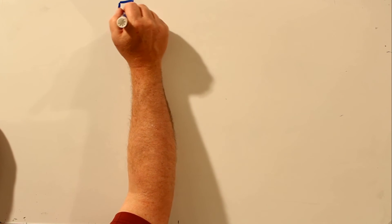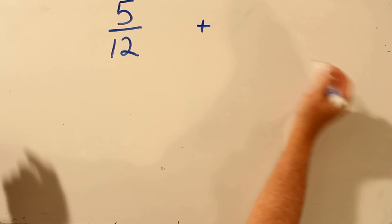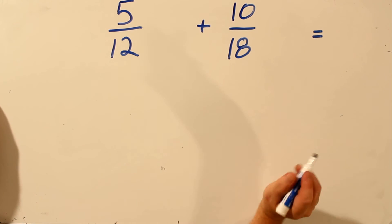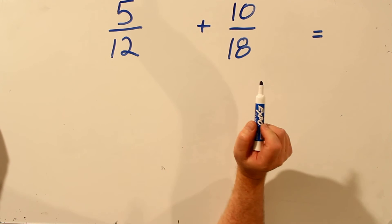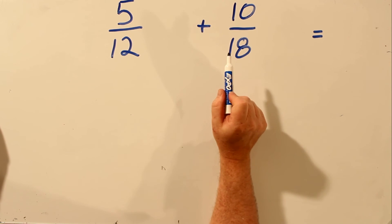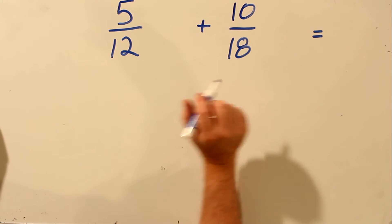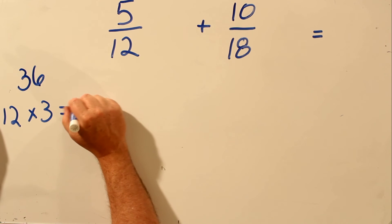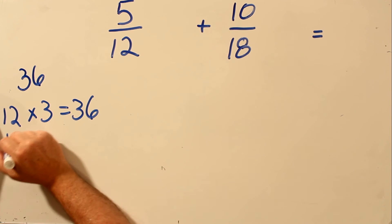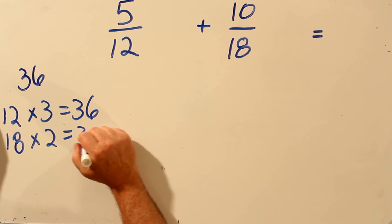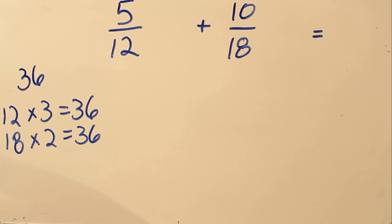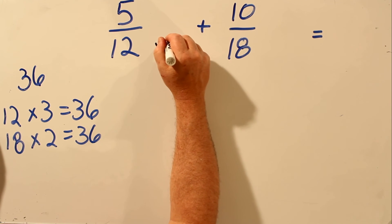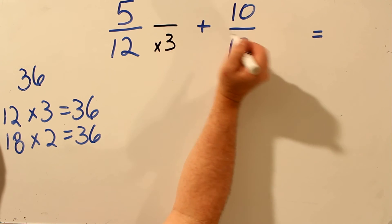Let's try one more. We'll add 5 over 12 and 10 over 18. In order to add these two fractions, the bottom number has to be the same. In order to make the number the same, we must first find the lowest common multiple. The lowest common multiple of 12 and 18 is 36. 12 times 3 is 36, and 18 times 2 is 36. Now we can make the bottom number 36. 12 times 3 is 36, so we multiply the 12 by 3, and if we multiply the bottom number by 3, we have to multiply the top number by 3.